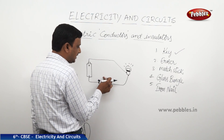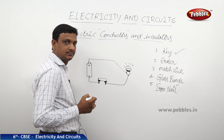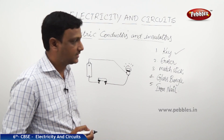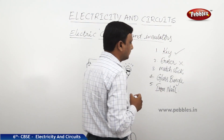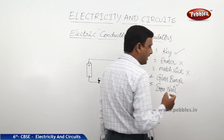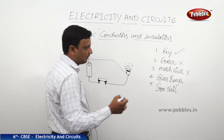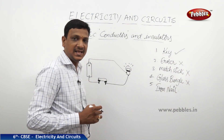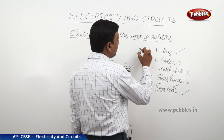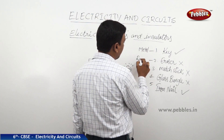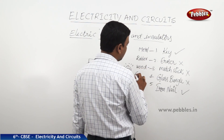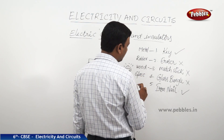Now for the second one, we take the eraser. We kept the eraser here — the bulb does not glow. It does not allow the electricity to pass through it, so the eraser is not a conductor. Matchstick — if you keep a matchstick, no. Keep a glass bangle, a piece of glass bangle — no. If you keep an iron nail — yes.